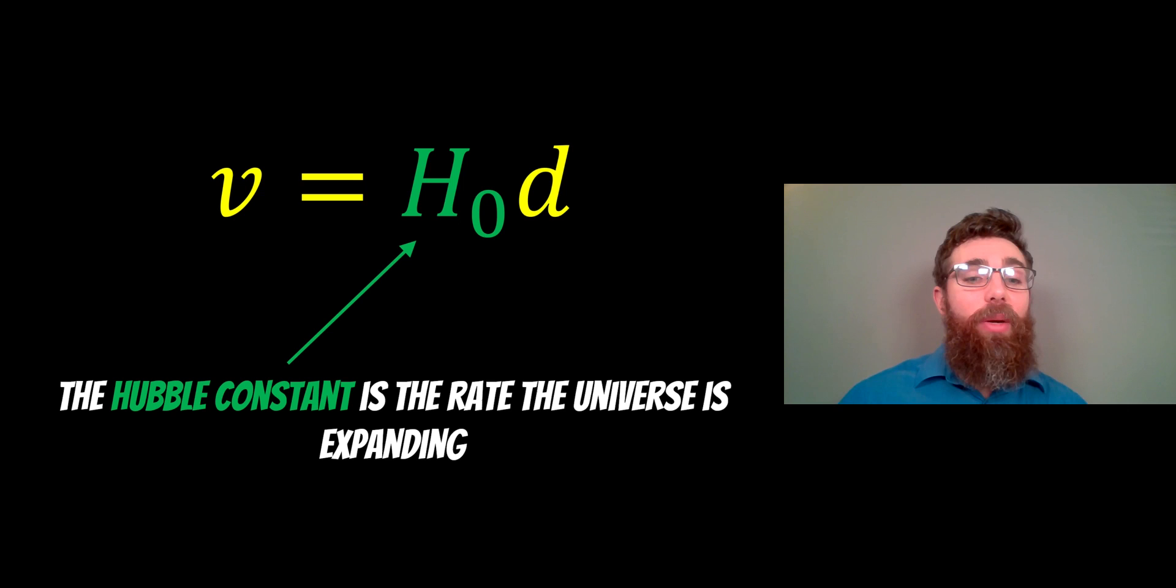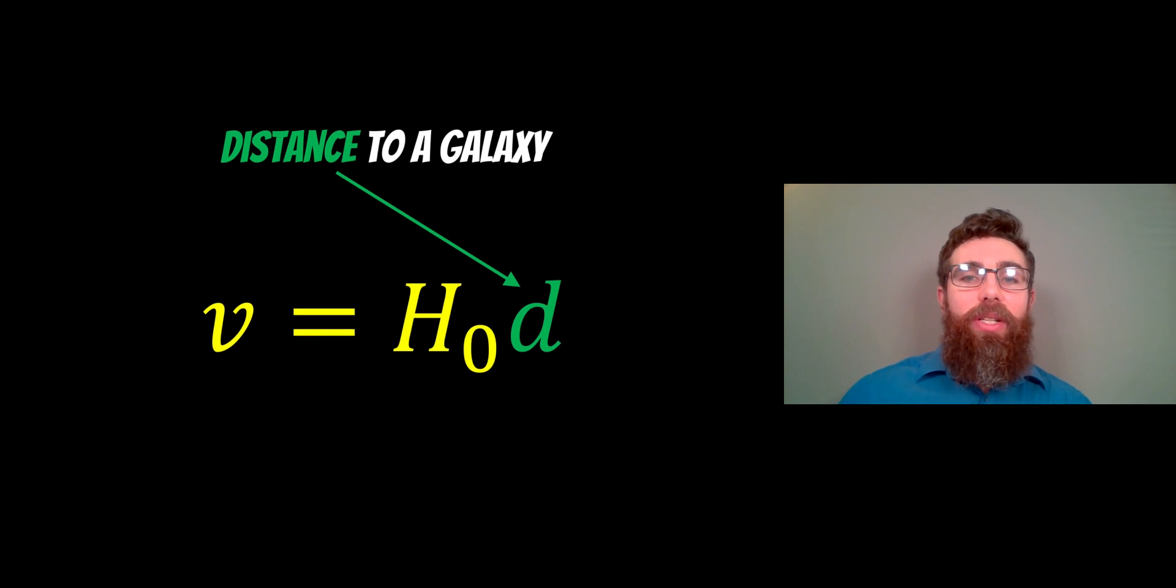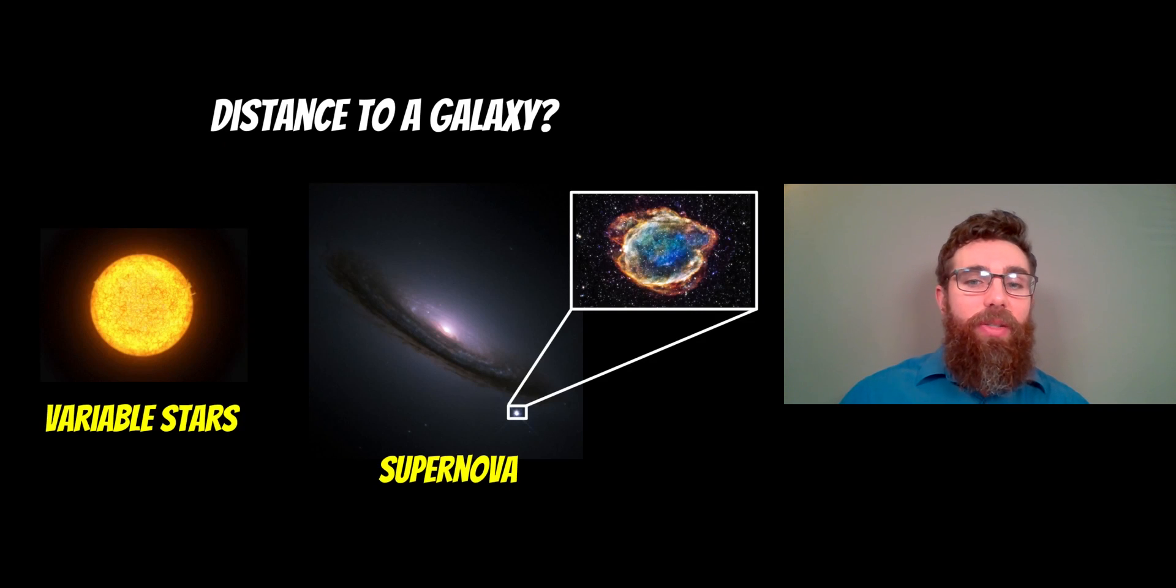What we want to do is calculate that. What measurements do we need to take in order to calculate that Hubble constant? Well, the first thing we need to do is get the distance to a galaxy. In this equation, d represents the distance to a galaxy. There are a few different ways you can actually get the distance to a galaxy. Two notable ones here.